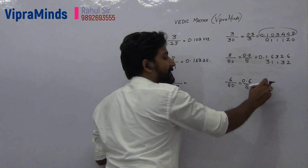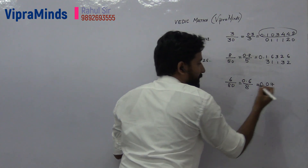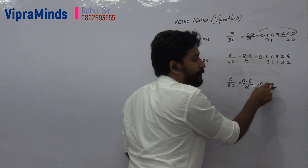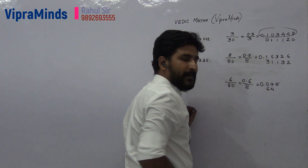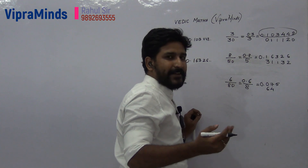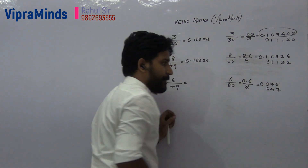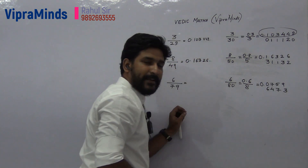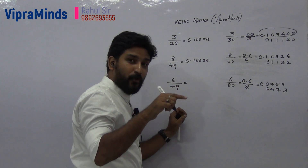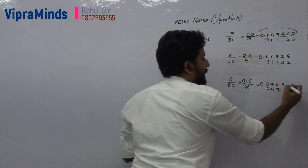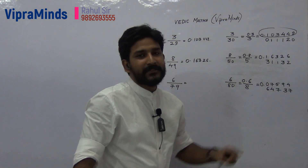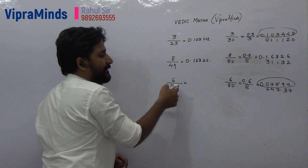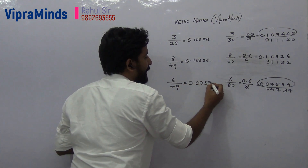Next number is 60: 8 into 7 is 56, remainder is 4. Next number is 47: 8 into 5 is 40, remainder is 7. Next number is 75: 8 into 9 is 72, remainder is 3. Next number is 39: 8 into 4 is 32, remainder is 7. Next number is 74 — just keep on dividing. The answer for 6 divided by 79 is 0.07594 and so on.